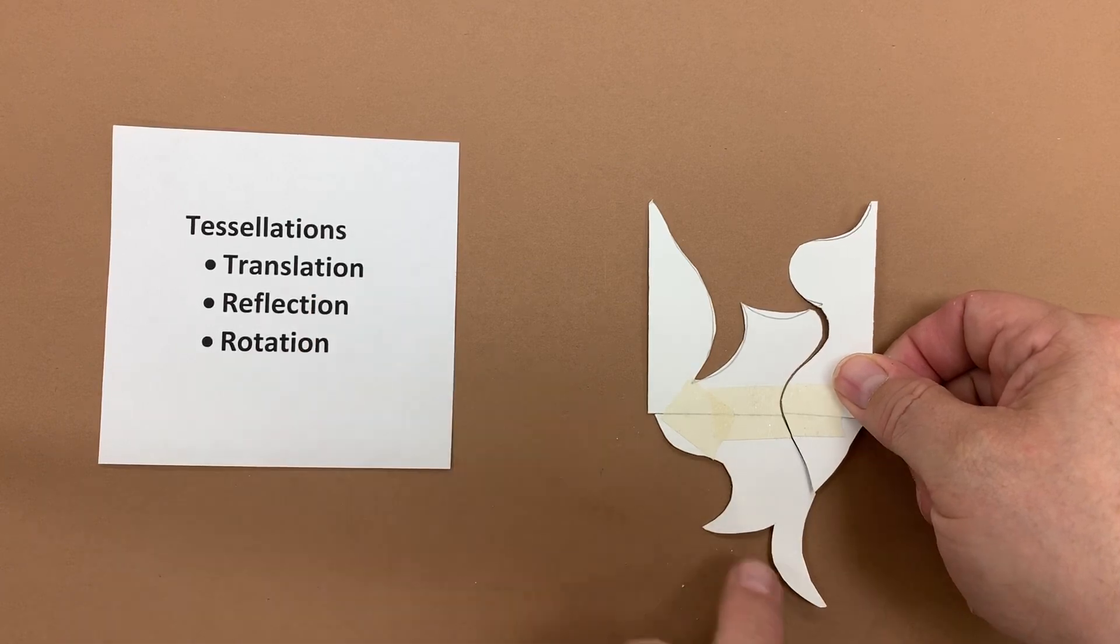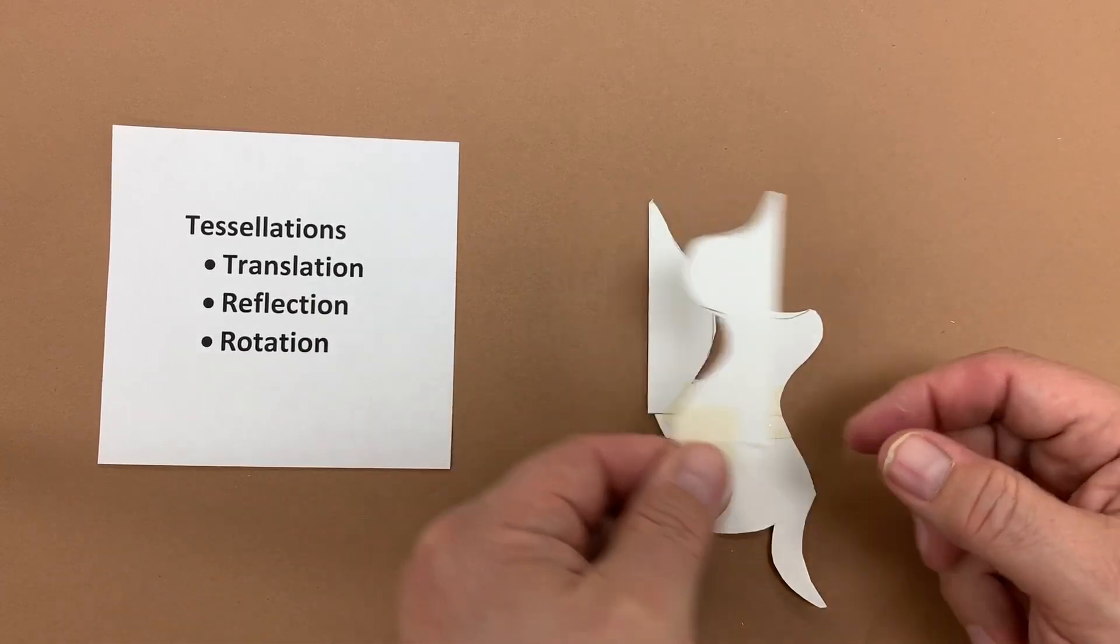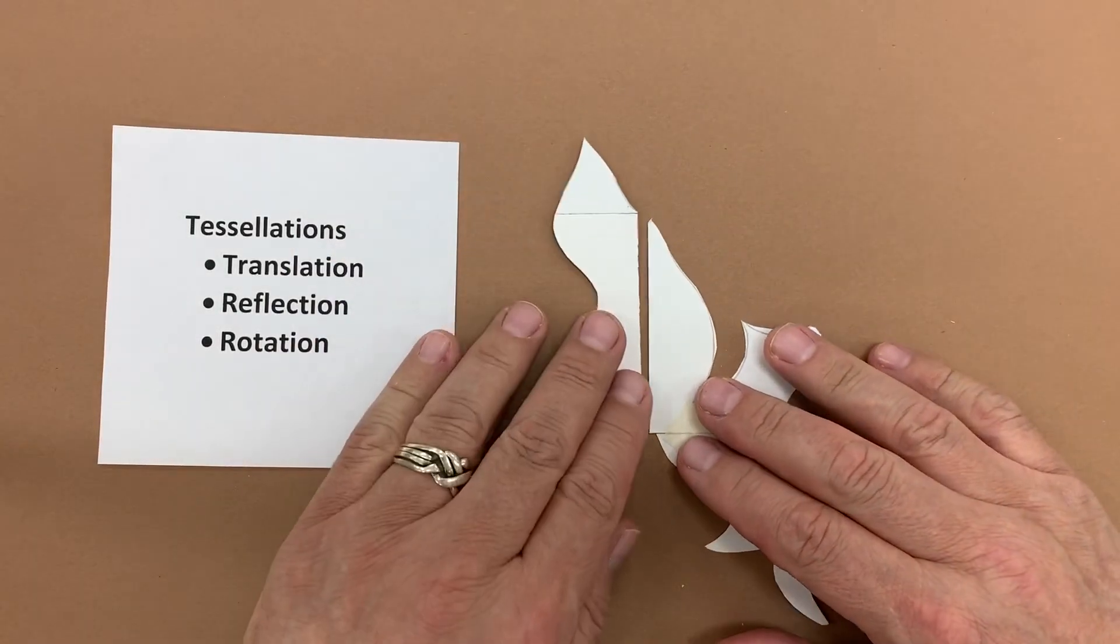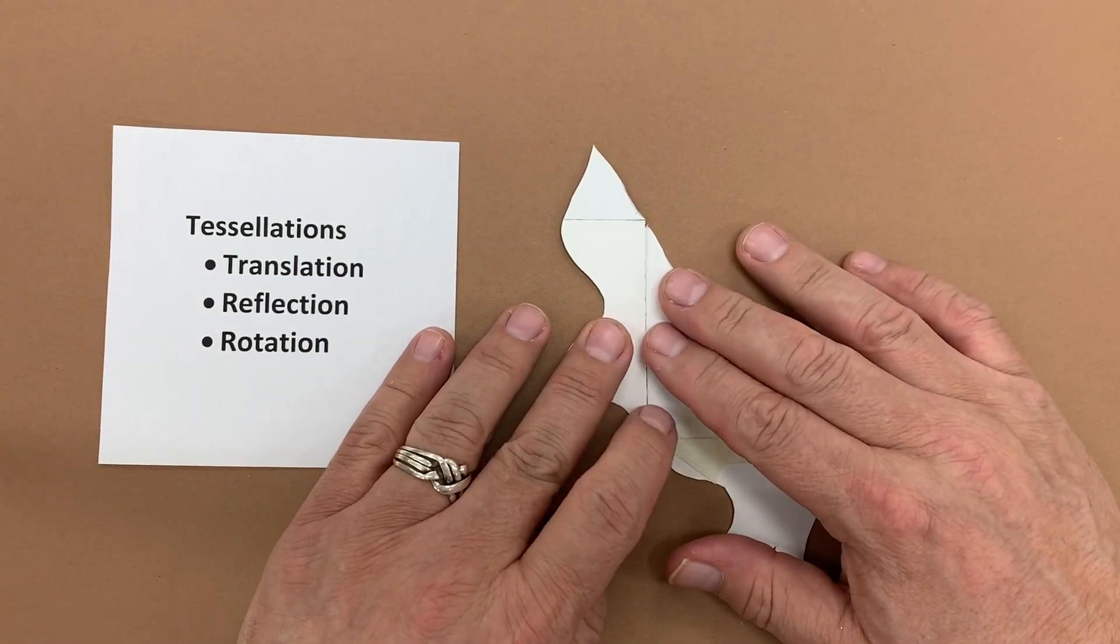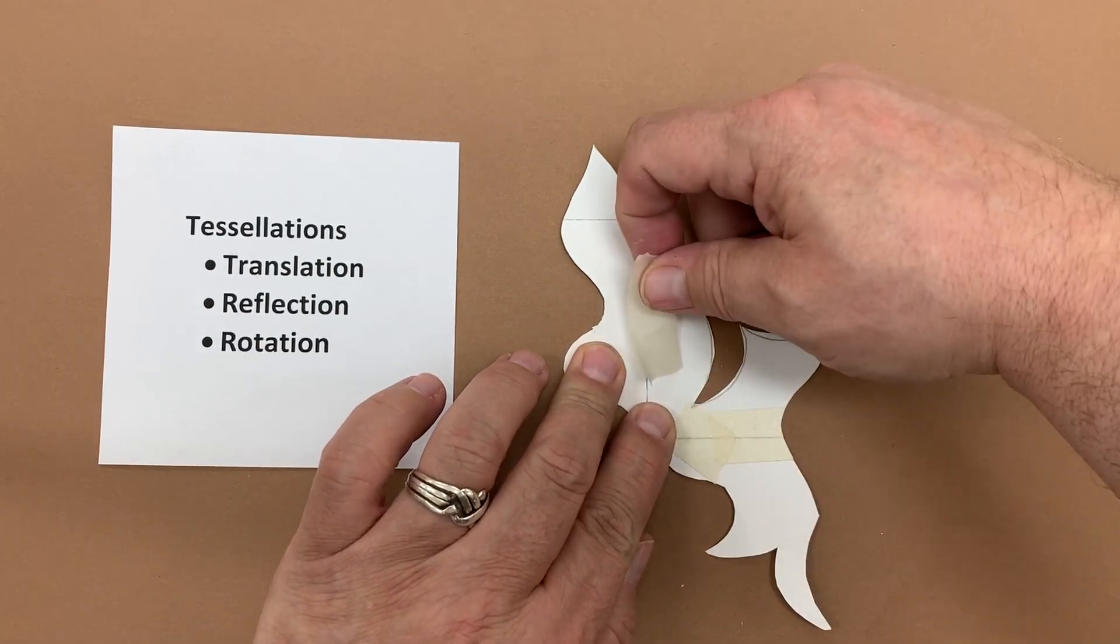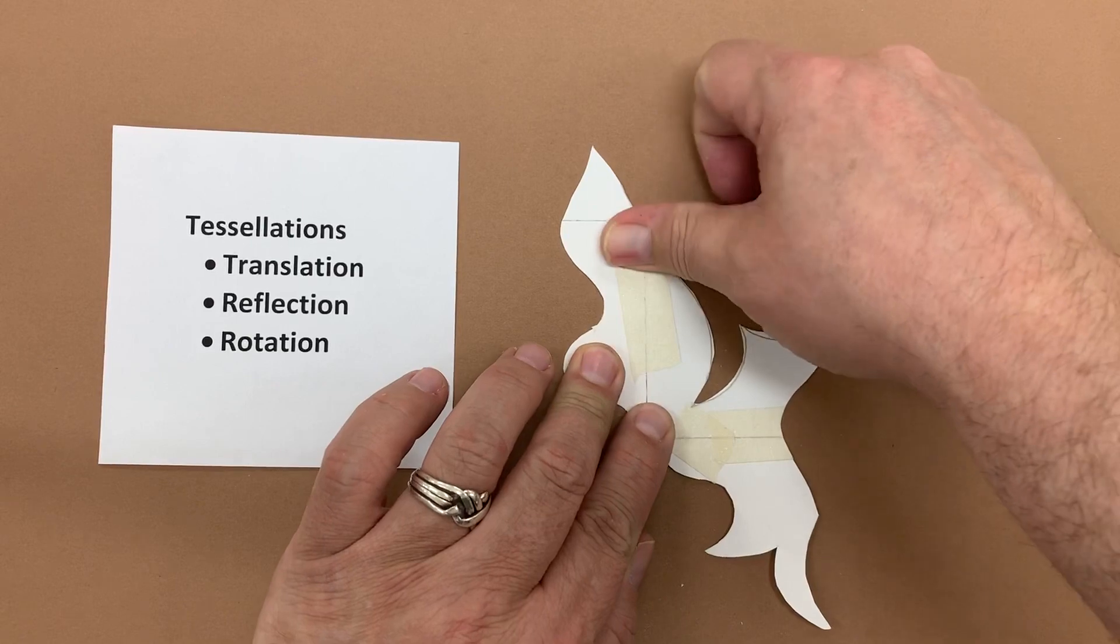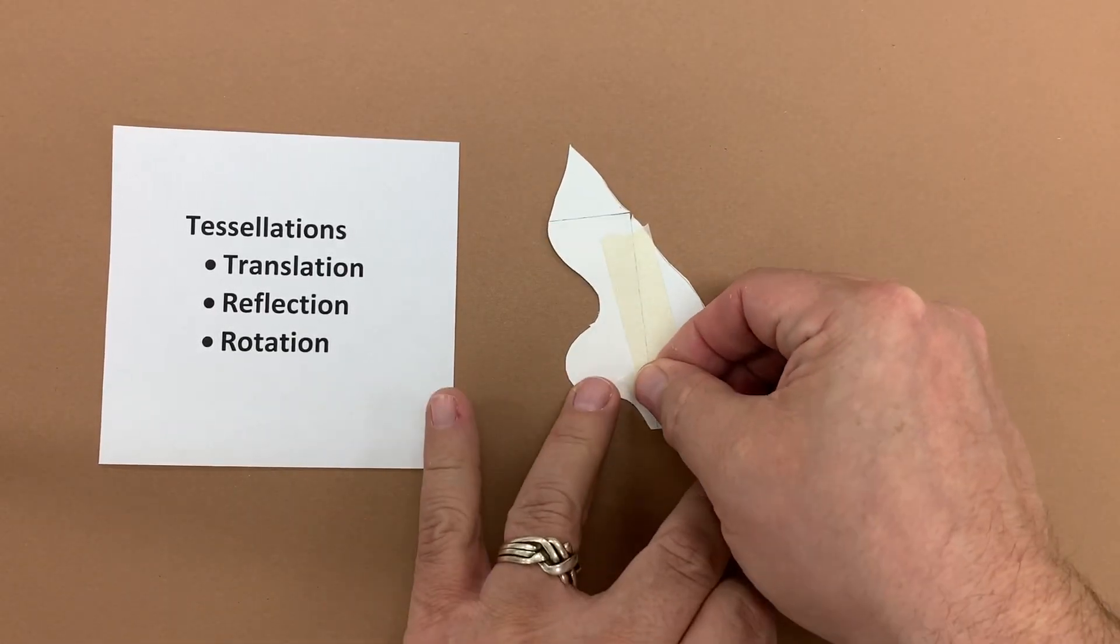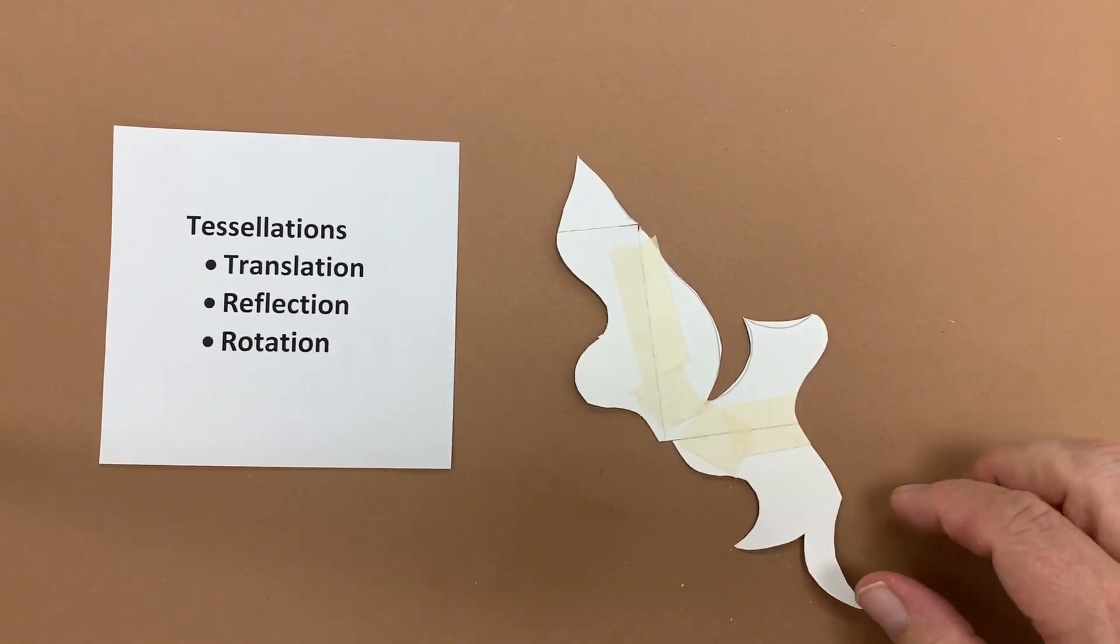Translation was where we just bring it over and tape it, but we're doing reflection. So we must bring it over and then flip it. Whenever you do translation, you never flip things. When you do reflection, you must flip things. And you can't just flip one and leave the other one alone. Both have to be flipped. You want to make sure that you're consistent with your technique.